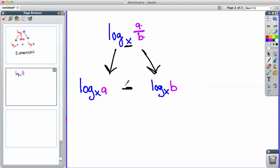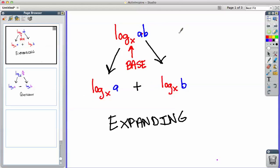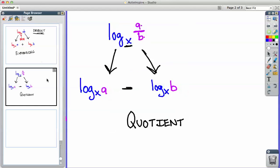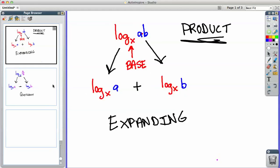And those are two very important properties of logarithms. This one is known as the quotient property. Quotient means division. Quotient is the answer you get in division. Whereas this one up here where you expanded the multiplication, that is known as the product property. So this one where you're dividing is known as the quotient property. This one known as the product property.